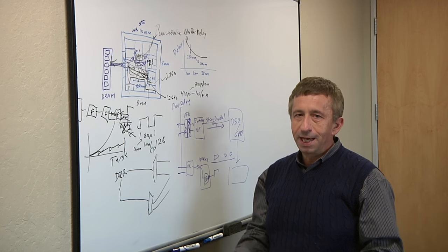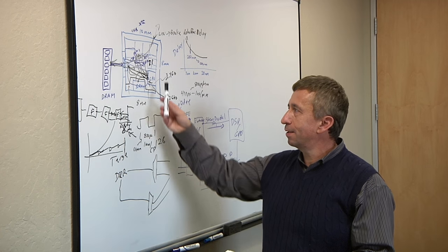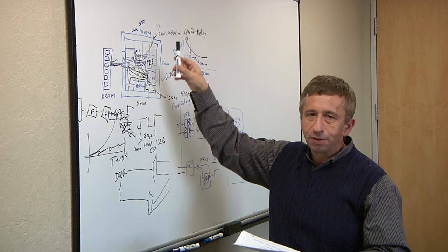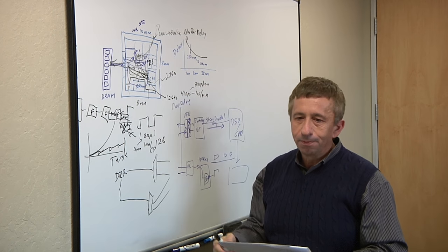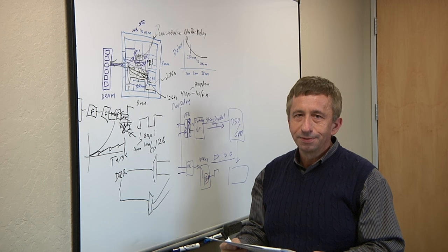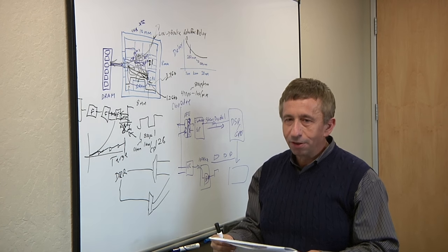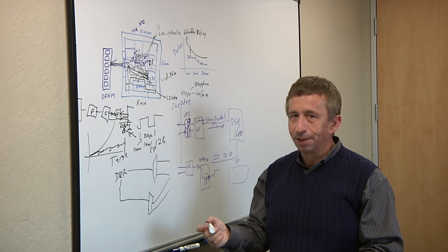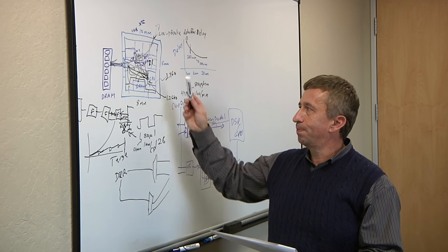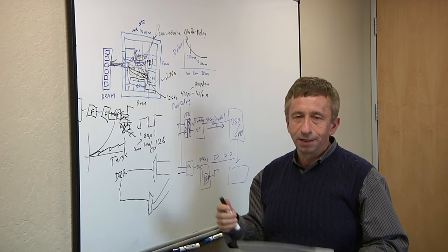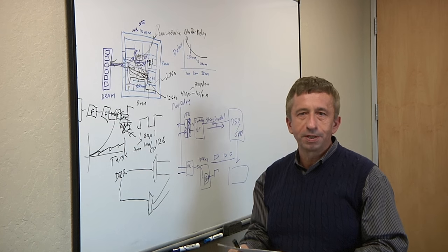The problem with that is that if you send bad register mapping to a tool like Innovus or to a DC Topo, it will do what you tell it to do, which is the wrong thing. And it takes a long time to run, and it takes a long time to debug. So part of it is to start building tools where floor planning is incorporated into the SOC interconnect architecture almost from day one.